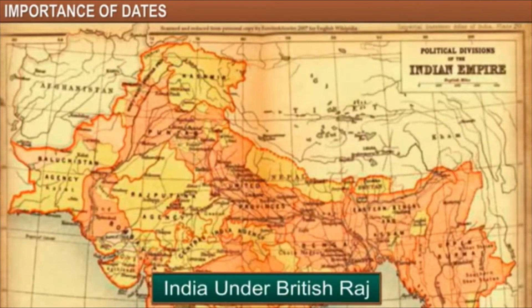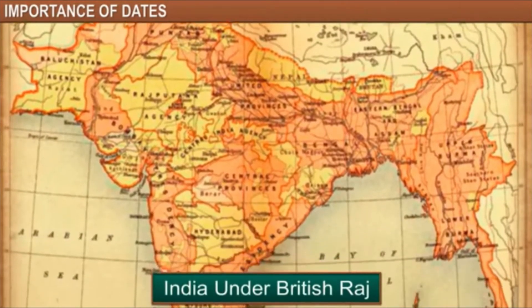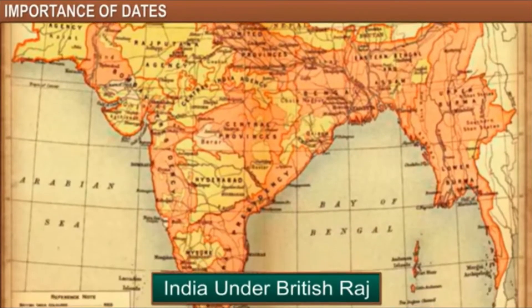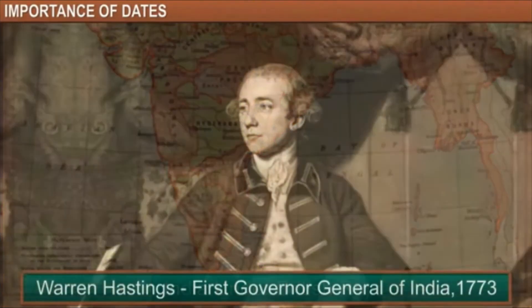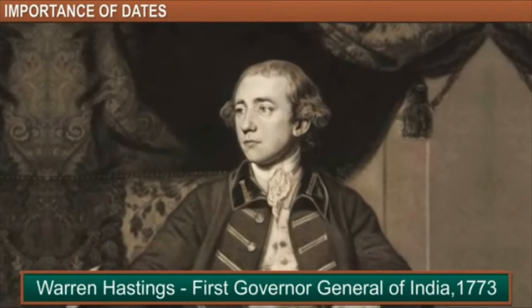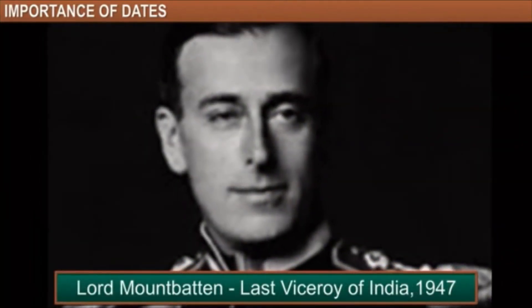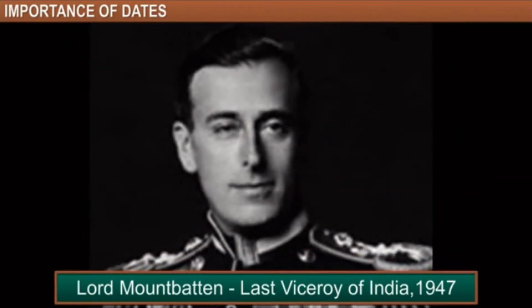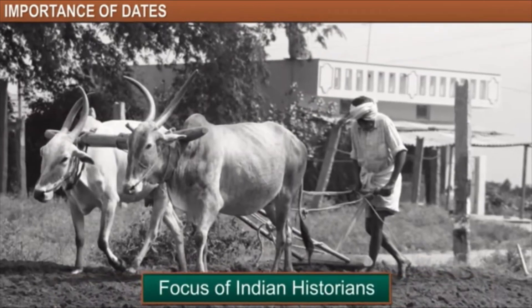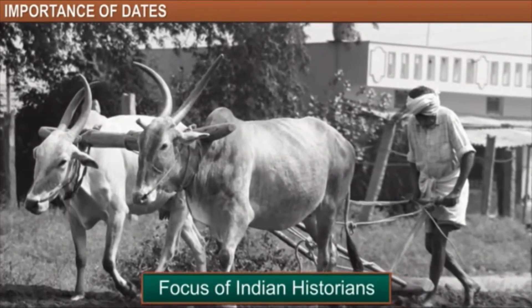According to British historians, the history of British Raj in India is all about the lives of the different Governor Generals of India — it begins with the first Governor General, Warren Hastings, and ends with Lord Mountbatten, the last Viceroy. Whereas an Indian historian focused on India's development under the British Raj.